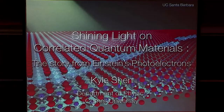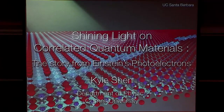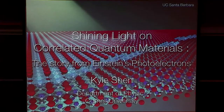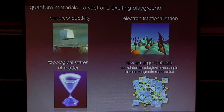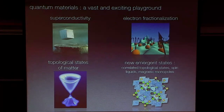Here is a graduate student's rendition of a very thin film of one of these correlated transition metal oxides. There are some interesting changes in the properties as you make them very thin, below a nanometer in thickness. Starting from the big picture motivation: quantum materials are interesting because of a vast number of very interesting emerging properties like superconductivity, electron fractionalization, and recently, topological states of matter.